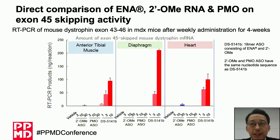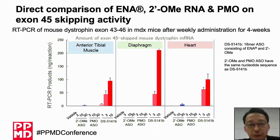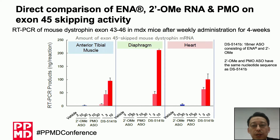This clear exon skipping activity in all tissues is very meaningful. We believe our compound has the potential to induce the dystrophin protein and may improve pathology in respiratory and cardiac muscle.